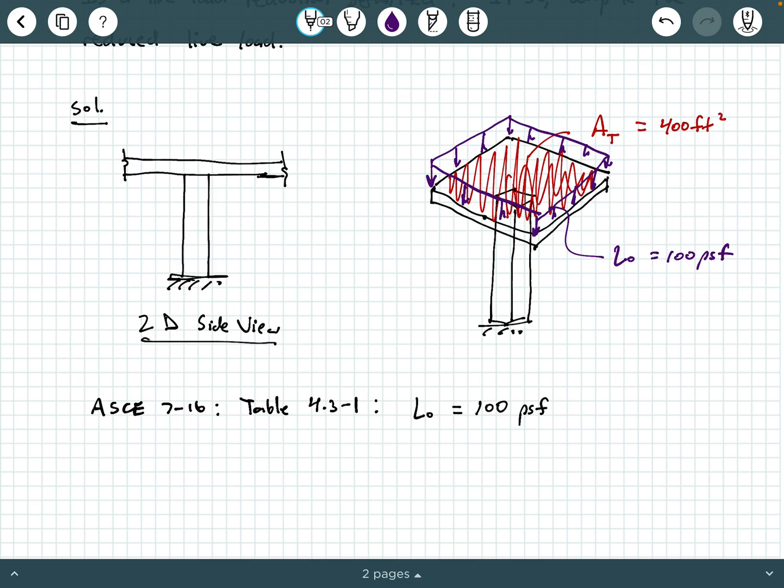Now, if you look at the third column in that table, 4.3-1, it says Live Load Reduction Permitted Question Mark. Now, for us, it says yes. So according to this table, Live Load is Permitted to be Reduced.